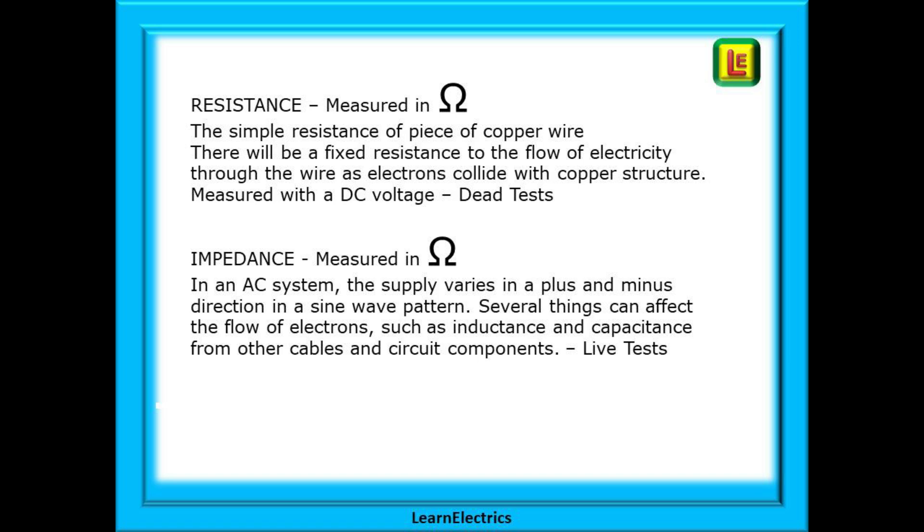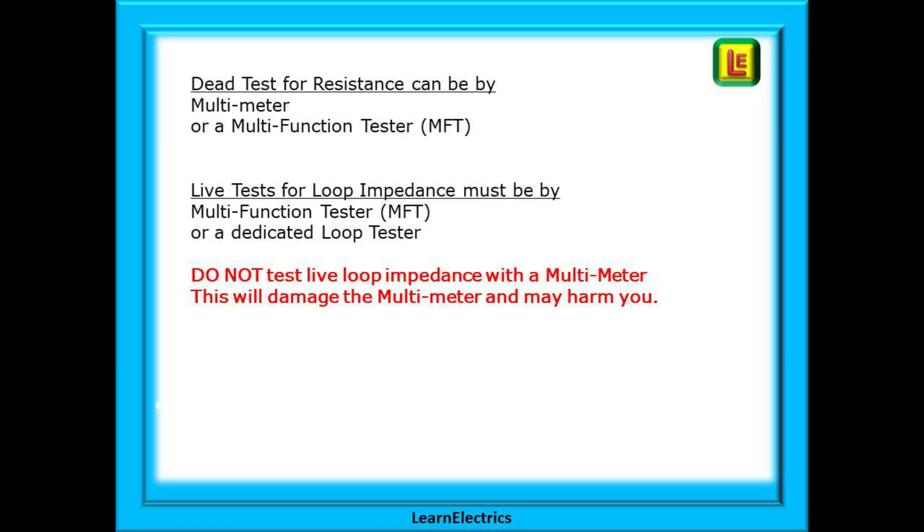With most installations of 50 cycles per second resistance and impedance are almost the same value. A dead test for resistance can be by multimeter or a multi-function tester MFT, but live tests for loop impedance must be by multi-function tester MFT or a dedicated loop tester. Do not test live loop impedance with a multimeter. This will damage the multimeter and may harm you.